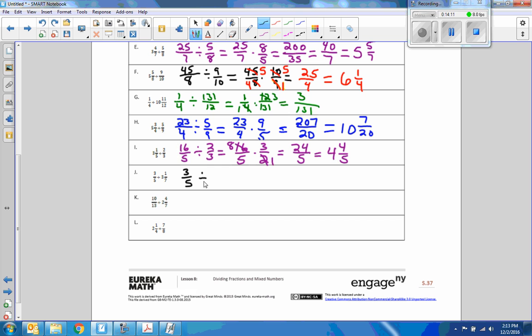Three over five divided by seven times three plus one. Seven times three is 21 plus one is 22 over seven. Three over five times seven over 22 equals 21 over 110.